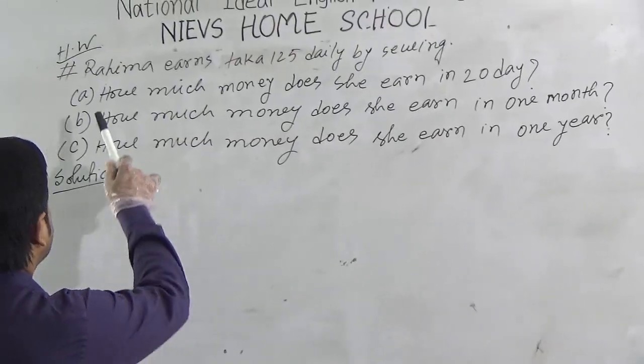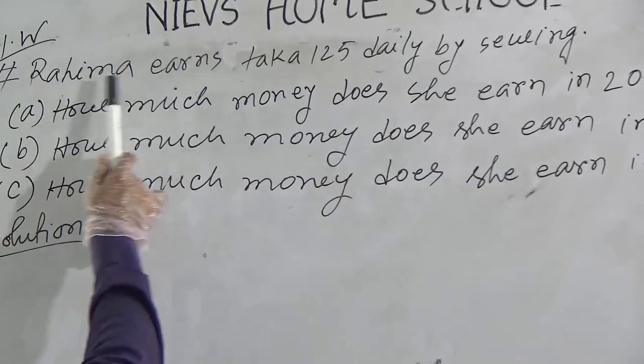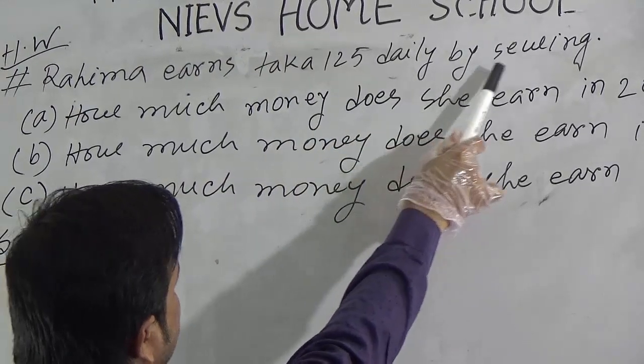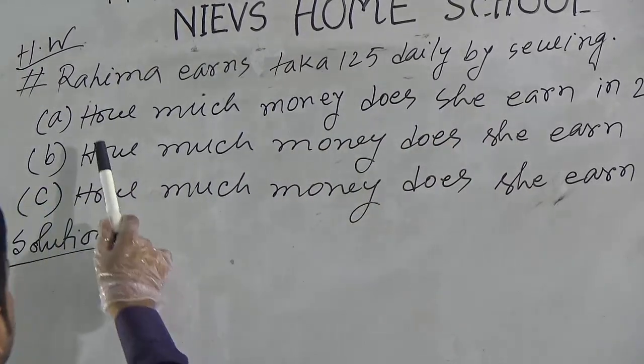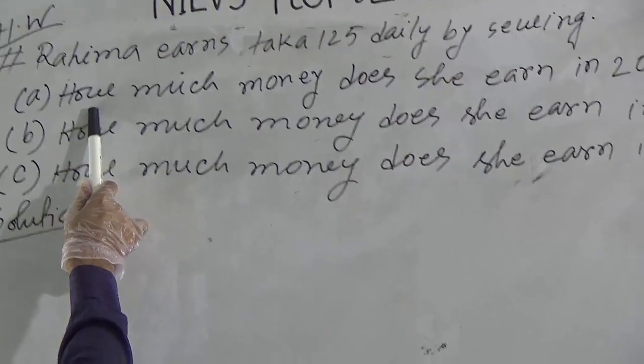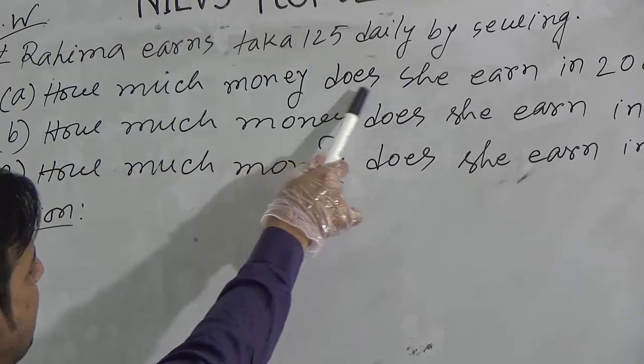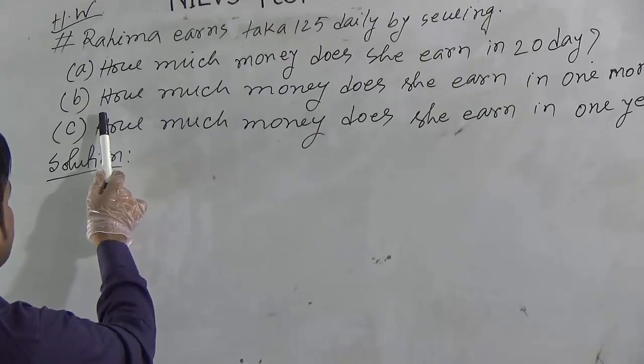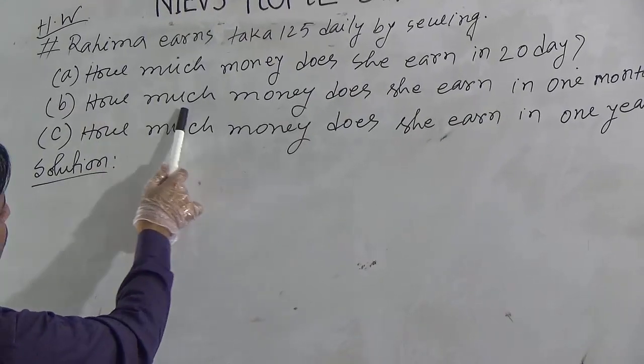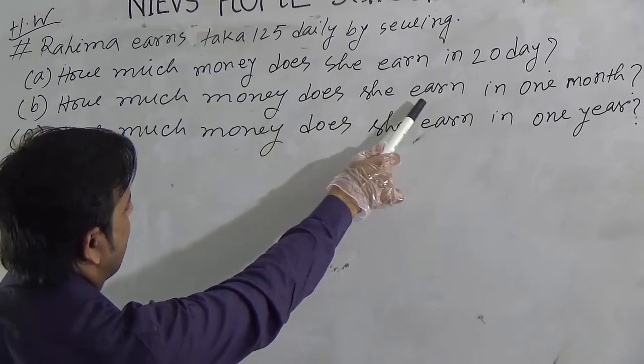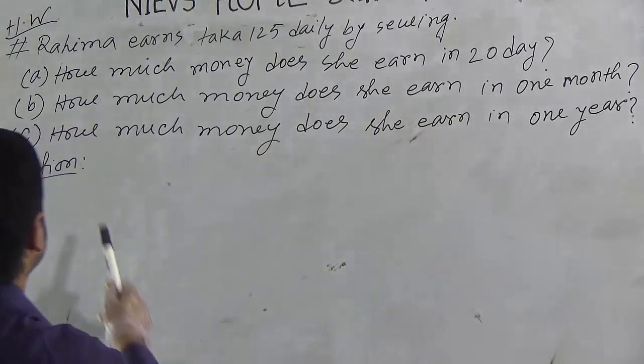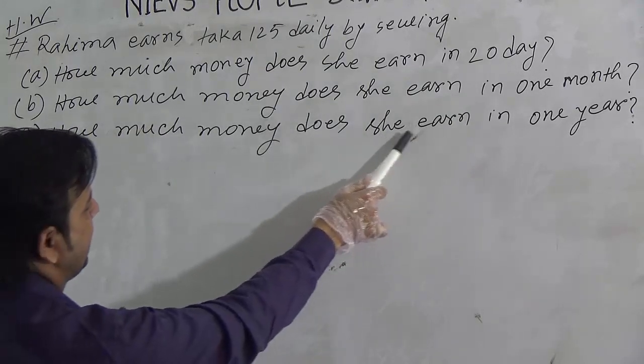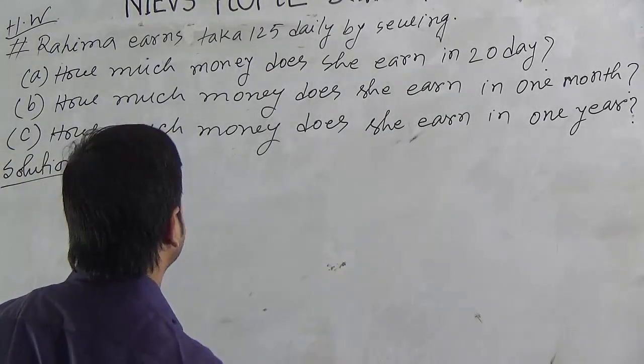The question is, Rohima earns Taka 125 daily by saving. First question: How much money does she earn in 20 days? Second question: How much money does she earn in 1 month? Third question: How much money does she earn in 1 year?